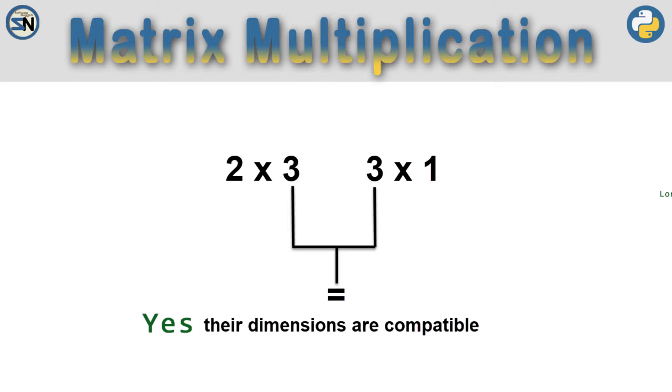Write down the two matrices on a piece of paper like you see above. Use the goalpost symbol to identify the appropriate value. Then ask yourself, are they equal? If they are equal, they are compatible, and you can multiply these two matrices.